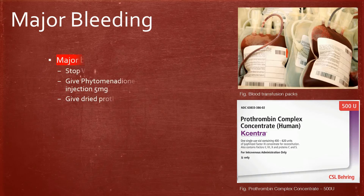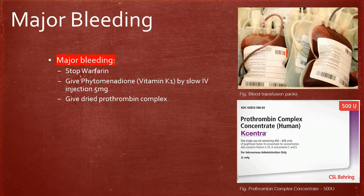For treatment of major bleeding, stop warfarin, give a higher dose of vitamin K injection at 5 milligrams, and give prothrombin complex or fresh frozen plasma to aid clotting.